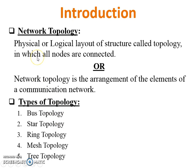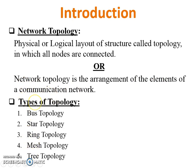First of all, the definition of network topology: the physical or logical layout of a structure is called topology, in which all nodes are connected with each other. Another definition is that network topology is the arrangement of the elements — called workstations or PCs — of a communication network. Types of topology: bus, star, ring, mesh, and tree topology.